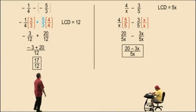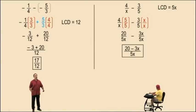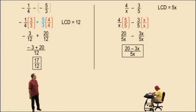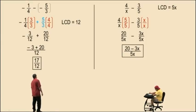And that's our final answer: 20 subtract 3x — you cannot add those, they are not like terms. And that is our final answer.